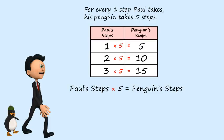Now, if I call Paul's steps x and the penguin's steps y, I can make that look super cool and mathy by writing x times five equals y. But we don't really like having x's all over the place, so we learned that we could write this as five x equals y, and that still means x times five.